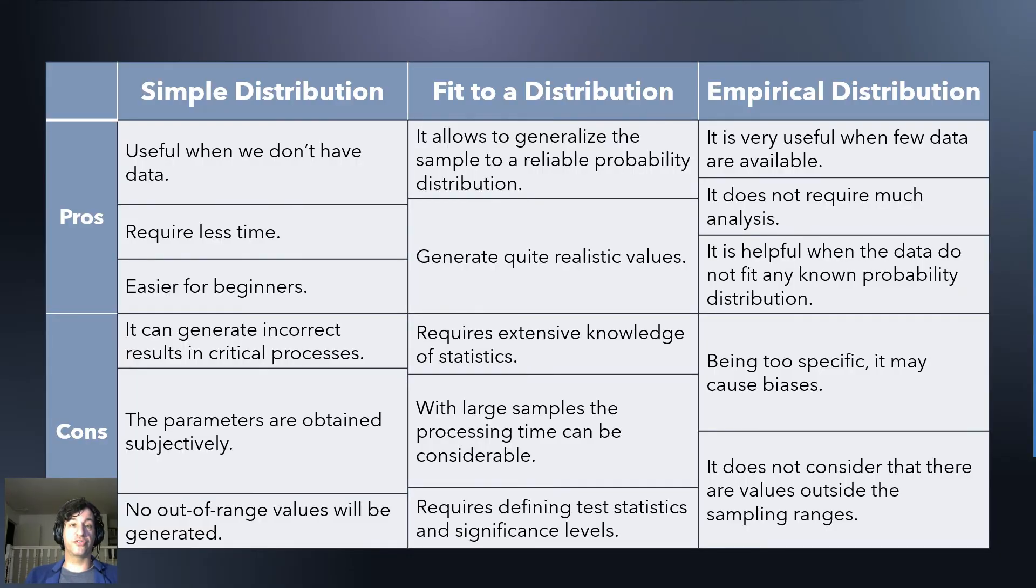Let's talk about pros and cons. When you don't have a lot of data and you don't have a lot of time or you're a beginner, a simple distribution is much easier to use. Beginners love triangular distributions and uniform distributions because it's quite simple to use them. Nevertheless, the con is that for critical processes it might result in incorrect results. Also, the parameters are quite subjective. Asking a mechanic how much time does it take to change a tire might have different answers in different days. Also, you don't have values outside the ranges that you choose.